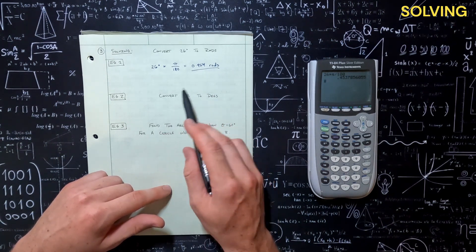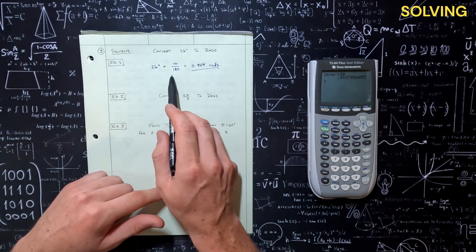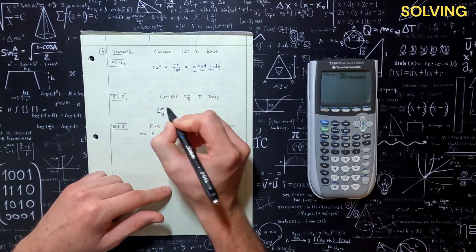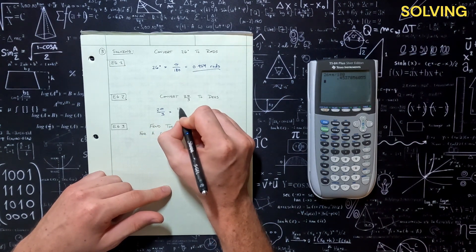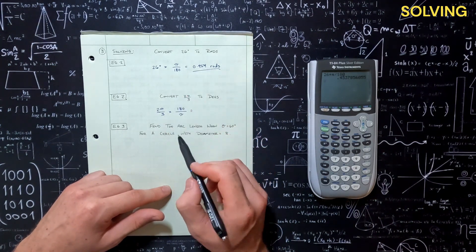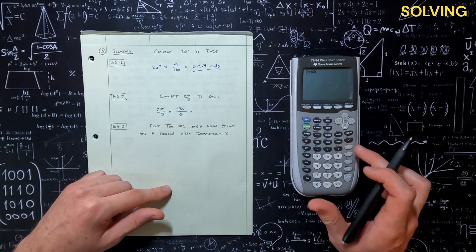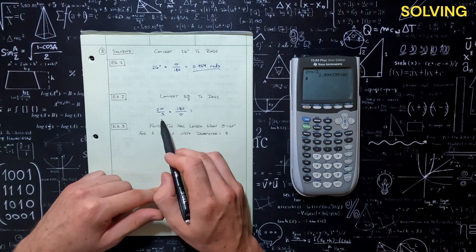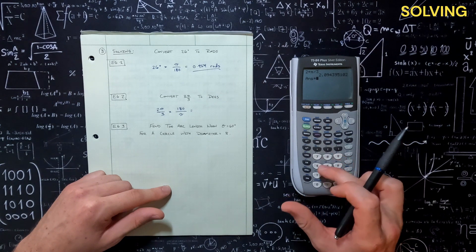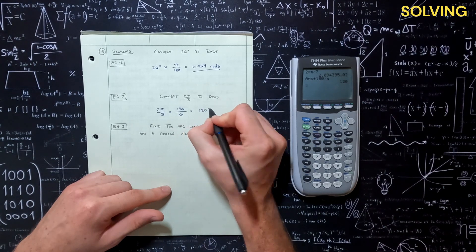Let's do the same thing in reverse — converting from radians to degrees. We're going to take our radian value of 2π divided by 3 and multiply by 180 over pi this time. So we take 2π divided by 3, multiply that by 180 divided by pi, and that is going to equal 120 degrees.